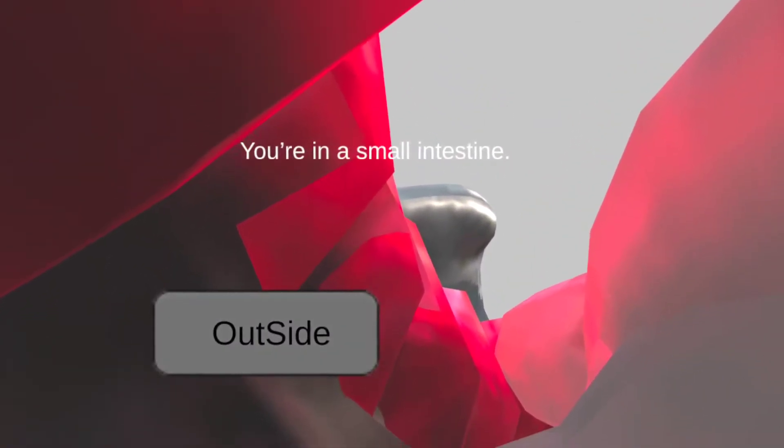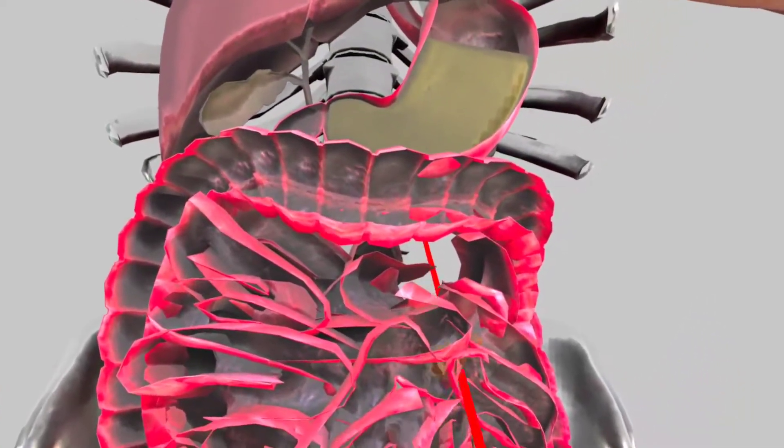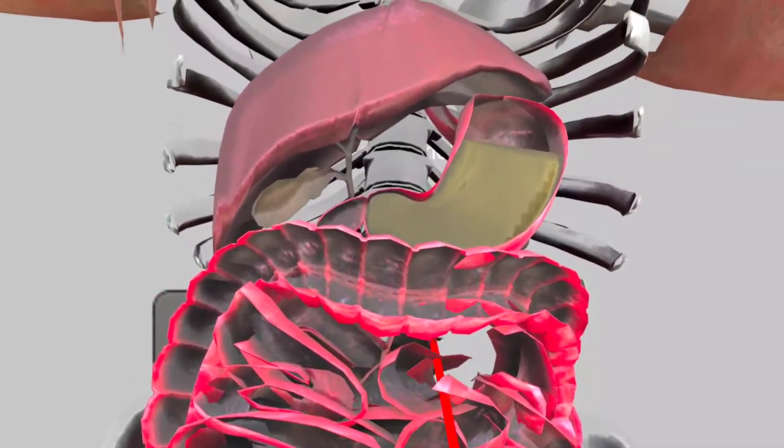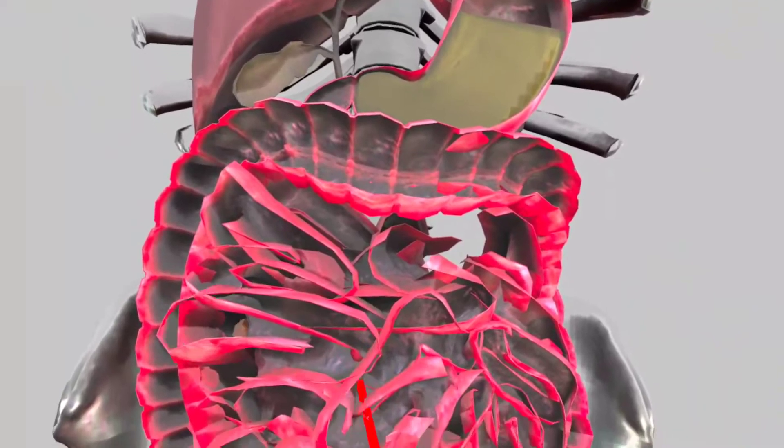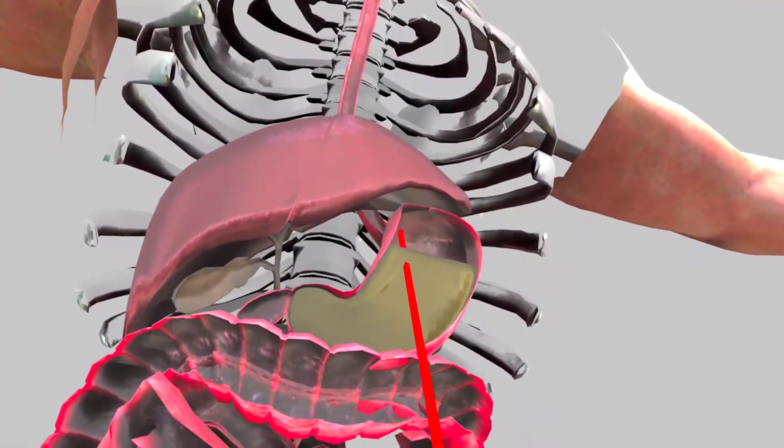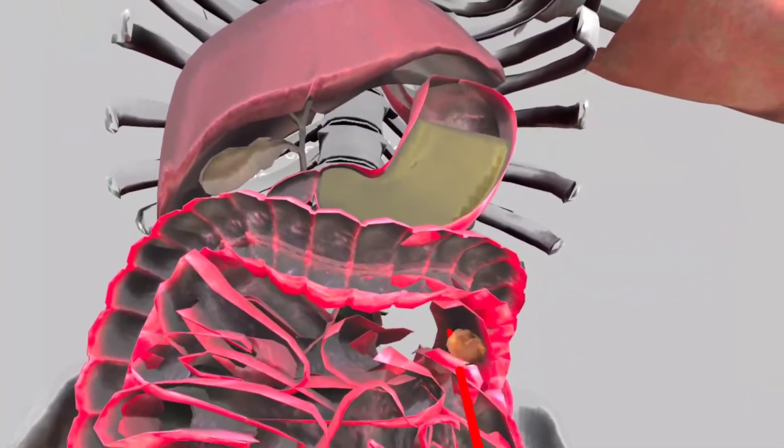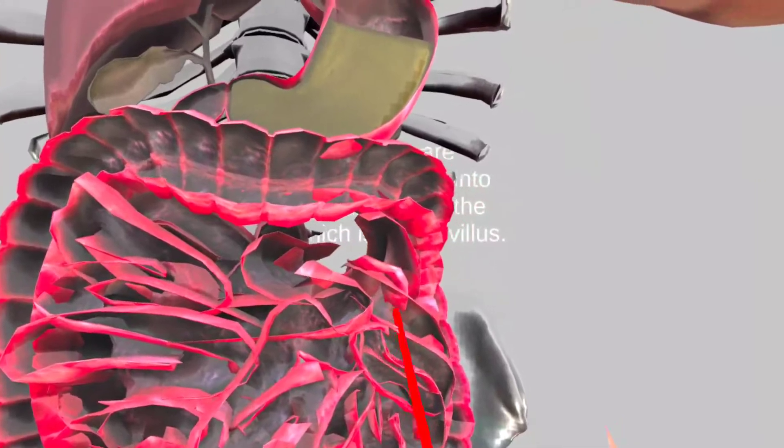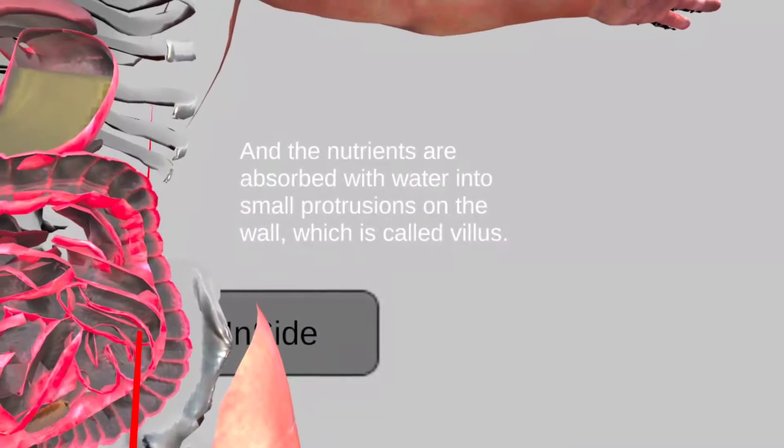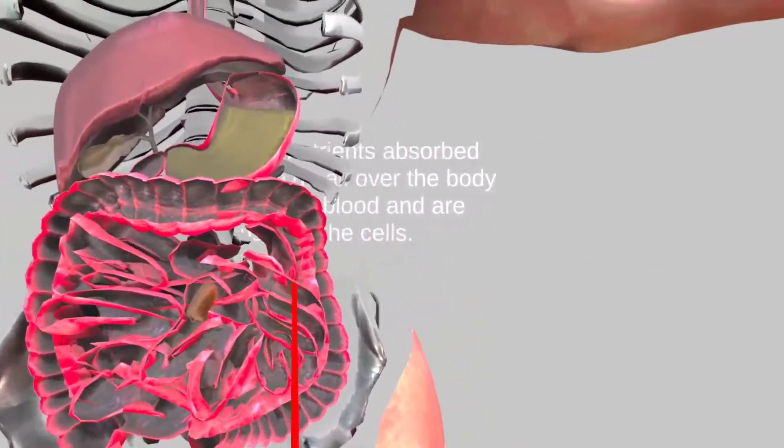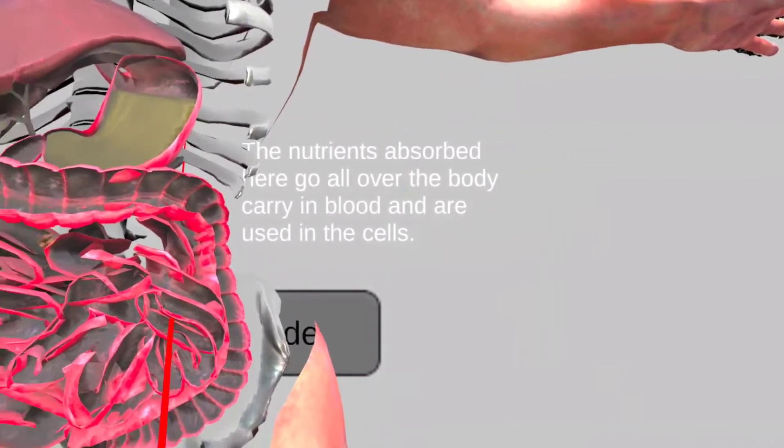You're in a small intestine. The small intestine is a digestive organ that can absorb all kinds of nutrients. It is about 7 meters in total. The first 30 centimeters are called duodenum. It secretes various digestive fluids to break down carbohydrate, fat, and protein. The nutrients are absorbed with water into small protrusions on the wall, which is called villus. The nutrients absorbed here go all over the body, carried in blood, and are used in the cells.